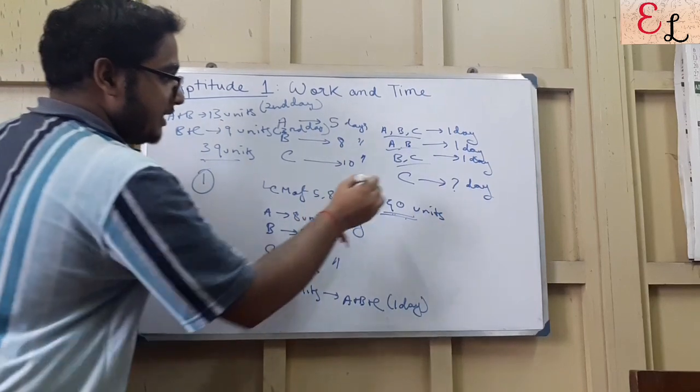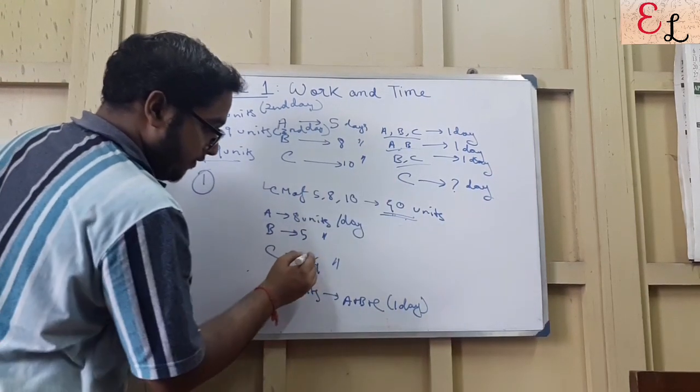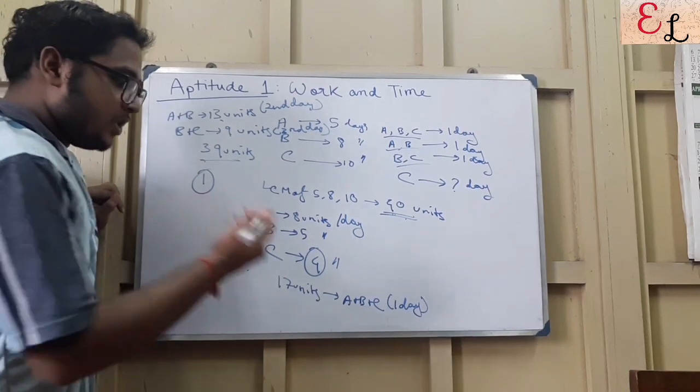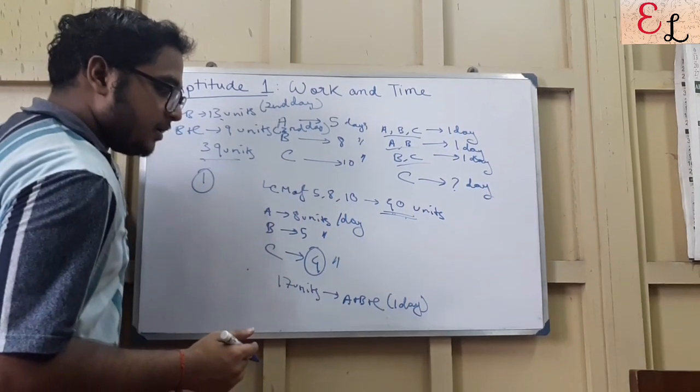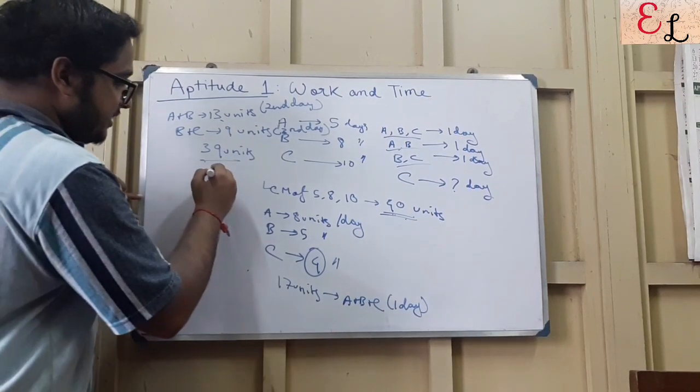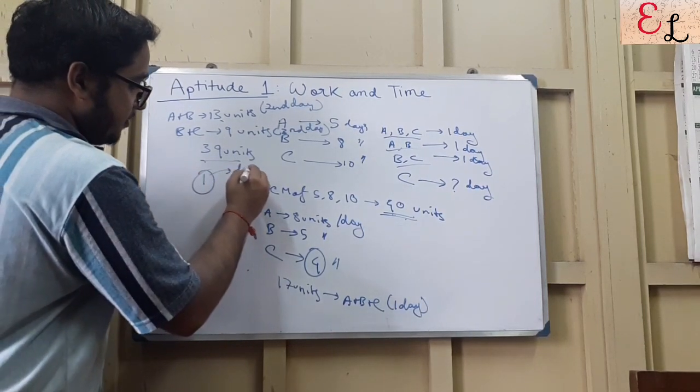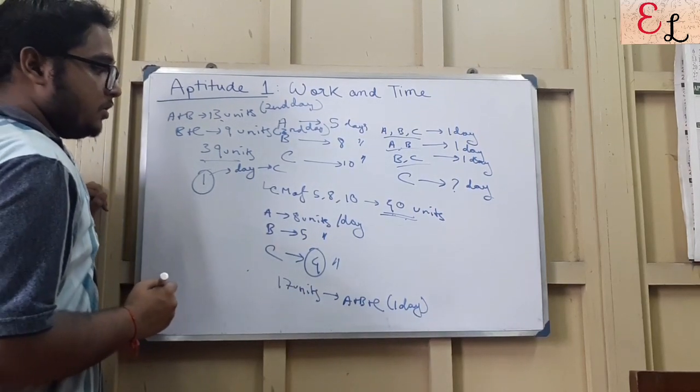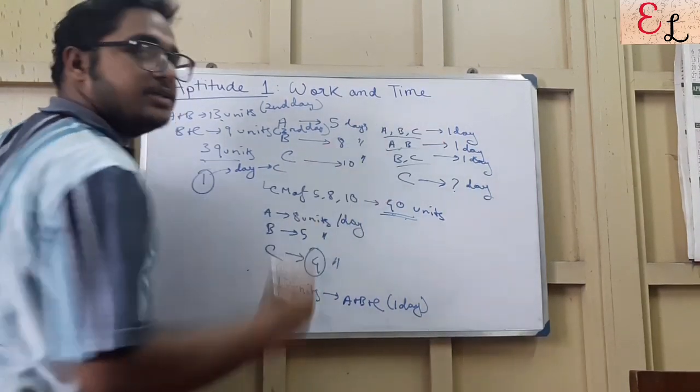We know that C does 4 units of work in 1 day, so 1 unit will be easily completed within 1 day by C. So it takes just 1 day for C to finish the remaining work. How many total days would be required? 4 days. It's a very easy problem to deal with.